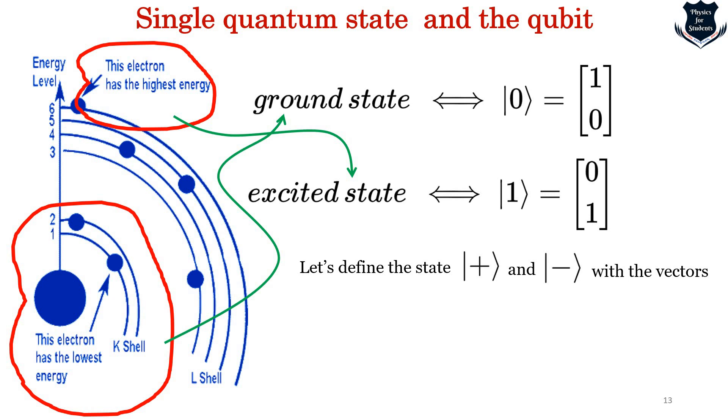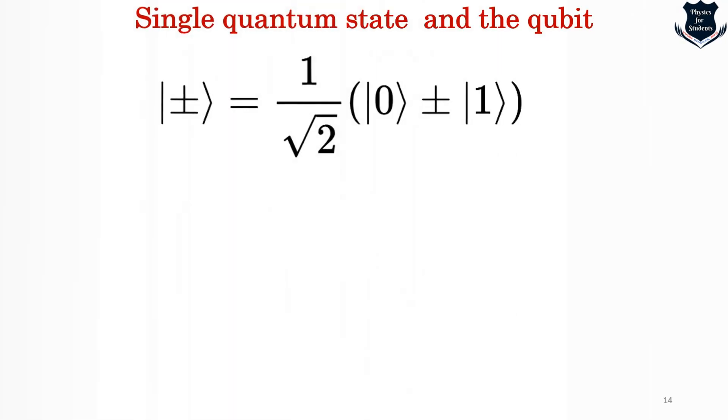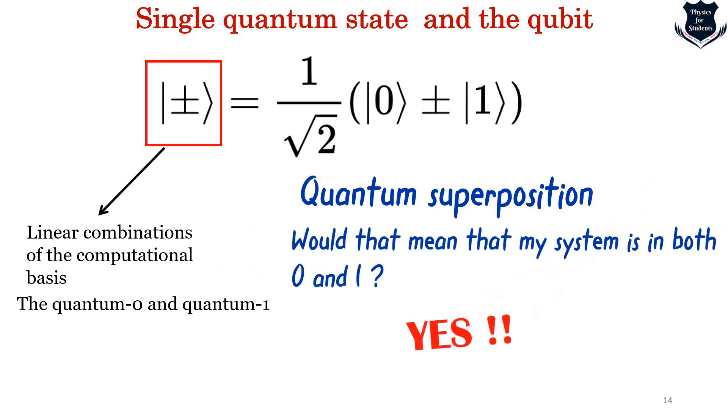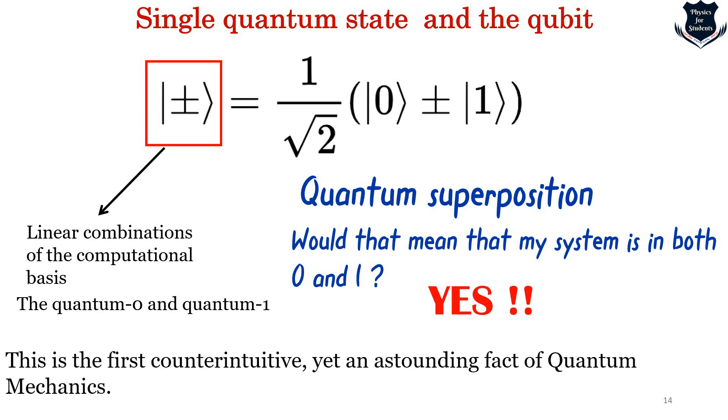Now something very interesting will come up. Let us define the state plus and minus with the vectors like this. Don't worry about the 1 by square root 2 term, you can just ignore for the time being. What we find most interestingly is that the above statement actually states that this plus-minus ket sign is basically a linear combination of the computational basis of quantum 0 and quantum 1. In quantum mechanics, we call this as quantum superposition. So does that mean the system is both in 0 and 1? The answer is a big yes. And that is basically one of the most counterintuitive and astounding facts of quantum mechanics. This is what is called the mathematical trickery, or one of the most important and interesting things of quantum superposition.